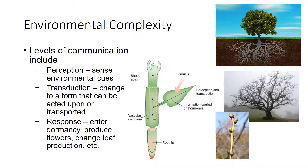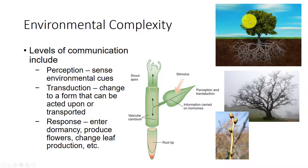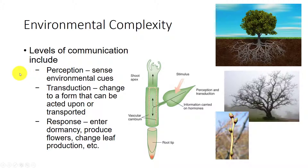Most plants exist in several different microenvironments. Consider a small tree: its roots are in the soil, which is moister, cooler, and darker than air, while the highest branches are in open air exposed to full sunlight and extreme environmental conditions. Termed perception, the plant must sense environmental cues such as changes in temperature, moisture, or day length, or the nucleus must receive chemical signals if conditions in the surrounding cytoplasm change.